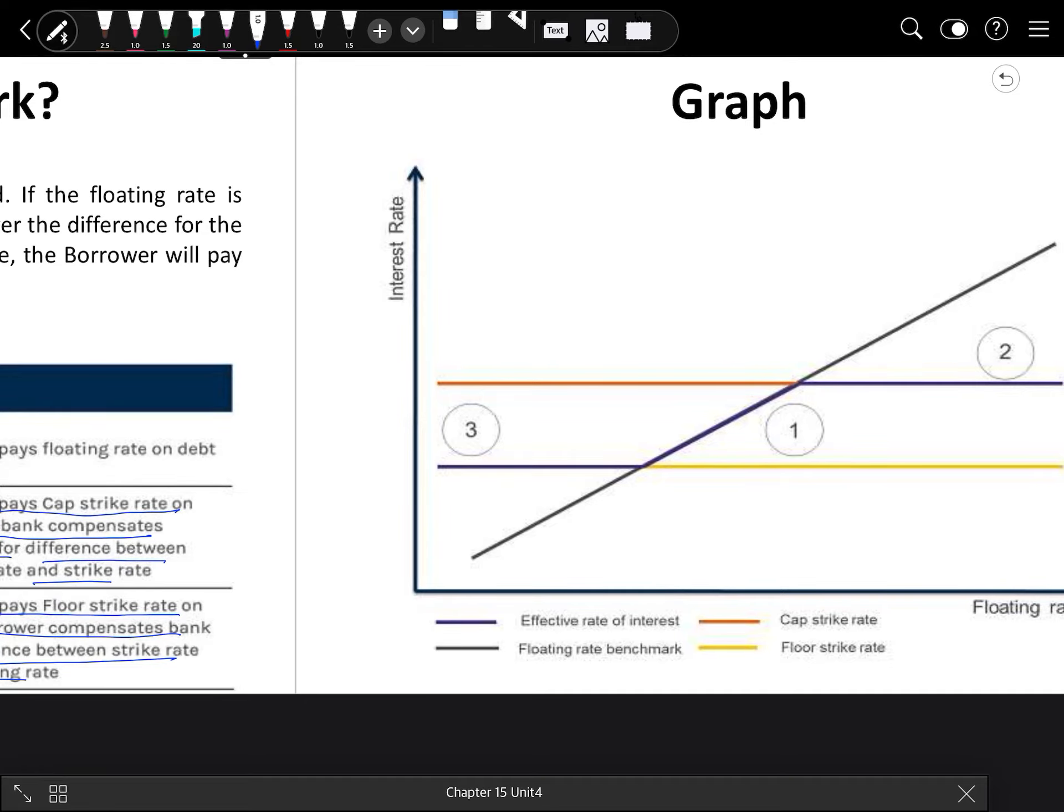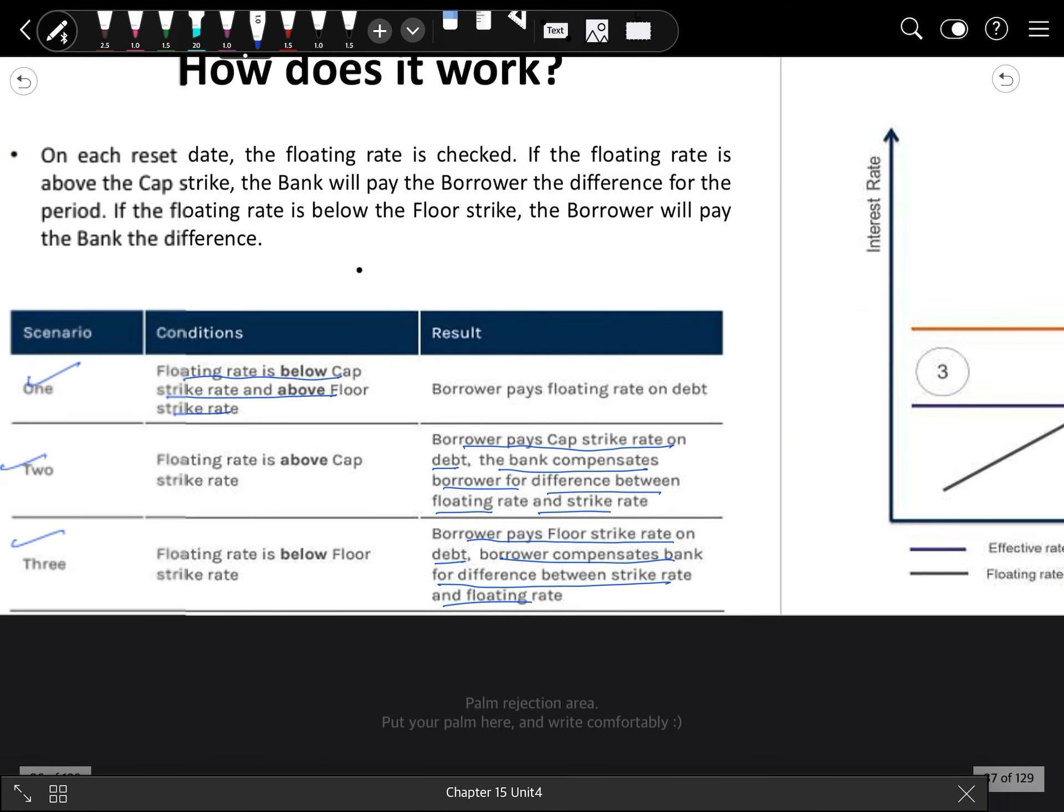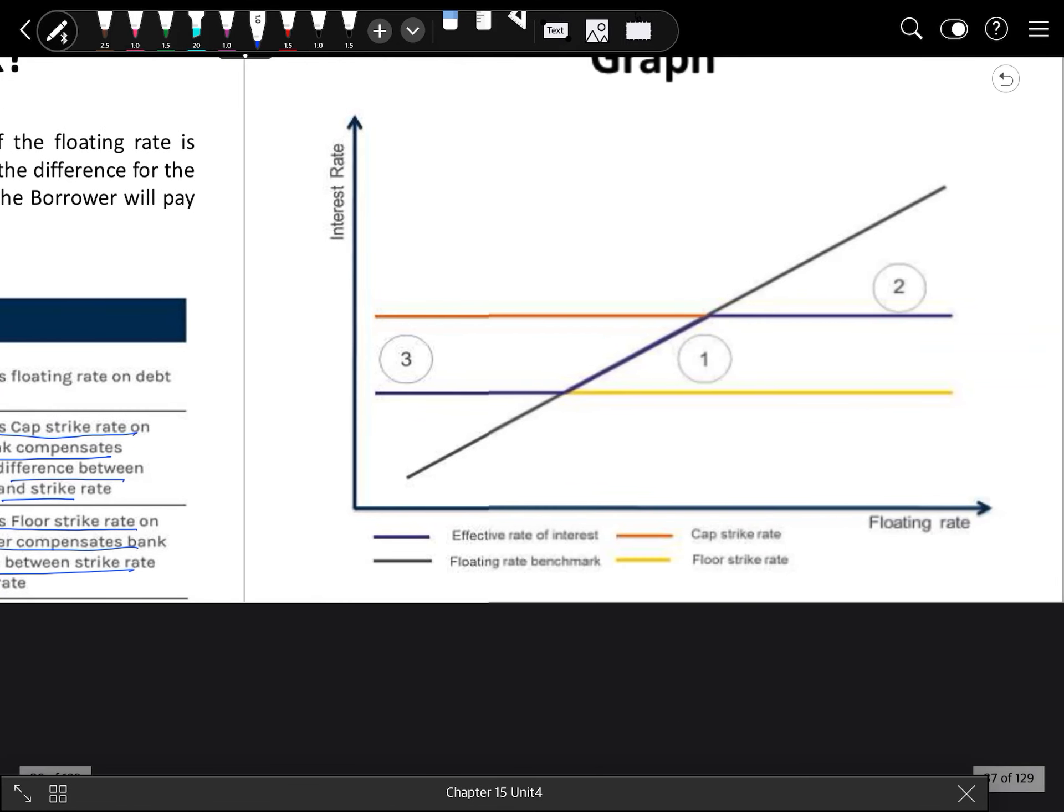Here you have the same scenario. If our floating rate is lower than the cap, then what will happen? As we discussed in the last diagram, this is the same diagram, so these cases are given according to these conditions.